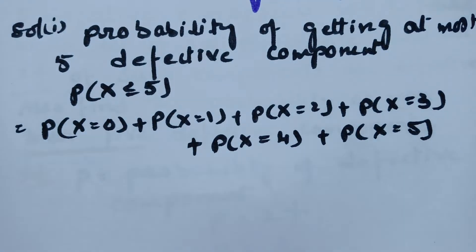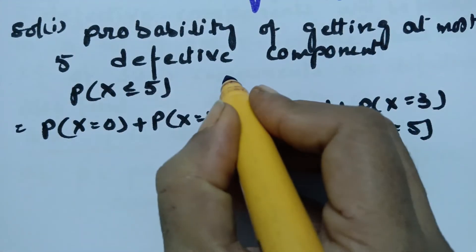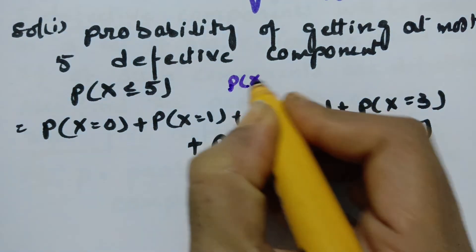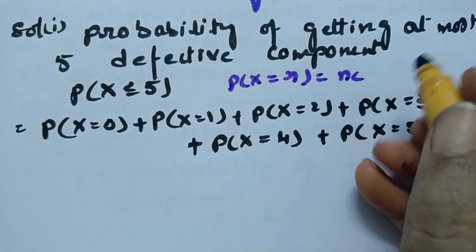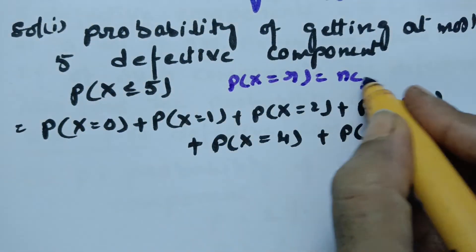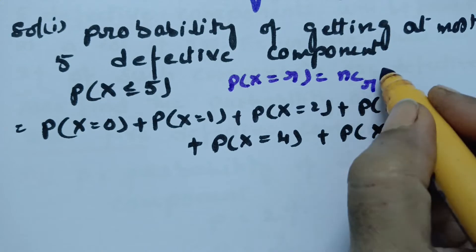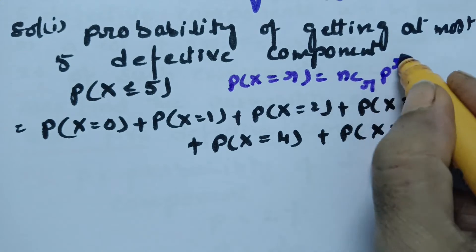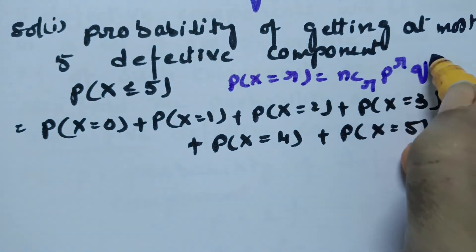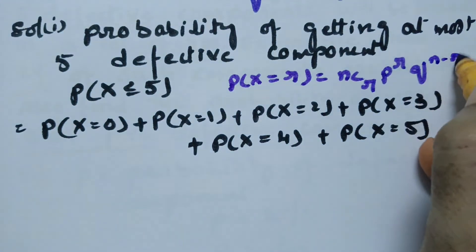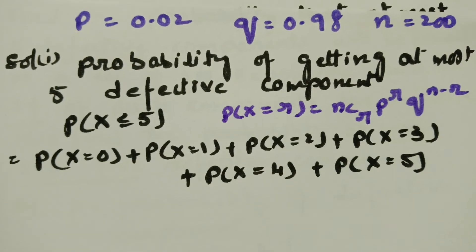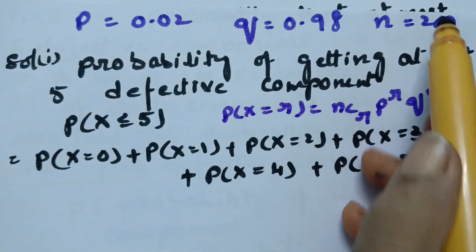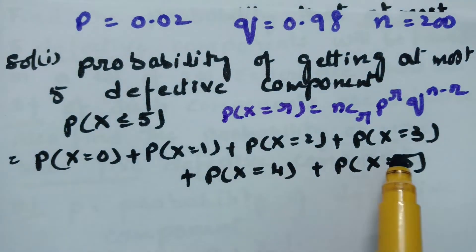We use the binomial distribution formula: P(X=r) = nCr × p^r × q^(n−r). Here r, n, p, and q values are all ready. We need to calculate each term using this formula.